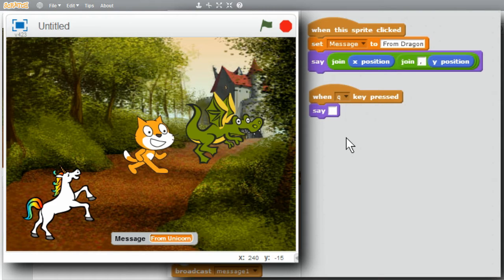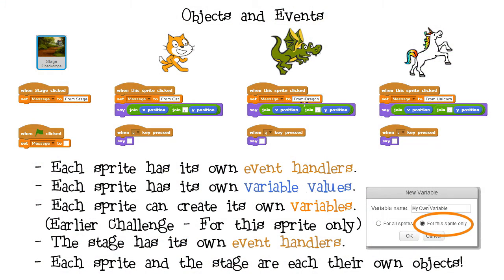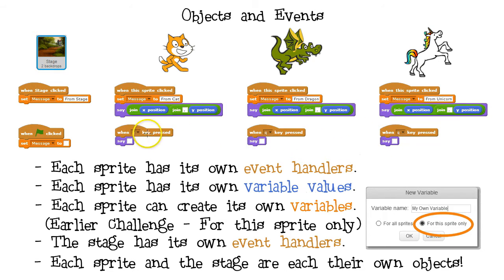In an earlier challenge about variables, I talked about objects and event handlers. I want to go over that some more now and emphasize objects and events. The sprites and the stage are each their own objects, and each has its own event handlers. Each sprite has its own variable values — the cat's XY position is different from the dragon's and the unicorn's. They each have their own messages and can each clear their own messages. One press of the Q key causes each sprite to clear its own message — three event handlers run when one Q key is pressed. Each sprite can also create its own variables using for this sprite only, so each myownvariable would be unique to each sprite.